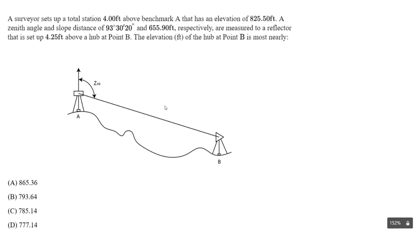By student request, let's do a civil engineering surveying question, specifically setting up a survey using a total station. We have a surveyor that sets up a total station 4 feet above a benchmark at A with an elevation of 825.50 feet. A zenith angle of 93 degrees 30 minutes 20 seconds and a slope distance of 655.90 feet are measured to a reflector set up 4.25 feet above a hub at point B.